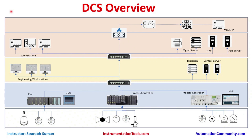In this chapter we will learn about the DCS overview. DCS is the Distributed Control System, where the control system is distributed and is not centralized at a single controller.